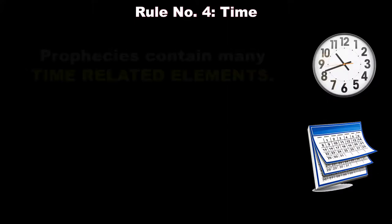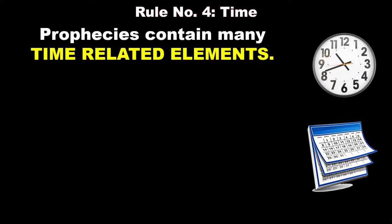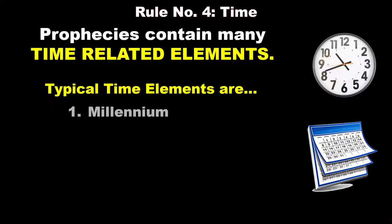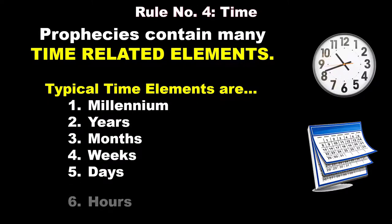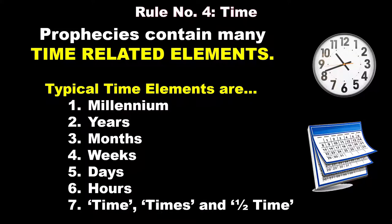Let's go on now to rule four. This has to do with time. Prophetic prophecies may contain many time-related elements. Typical time elements are a millennium, years, months, weeks, days, hours, or even time, times, and a half a time.